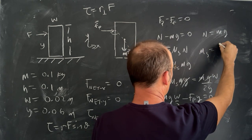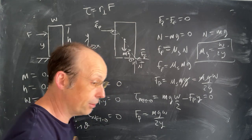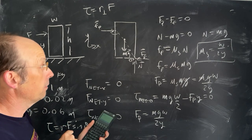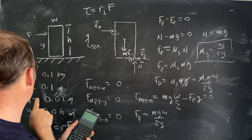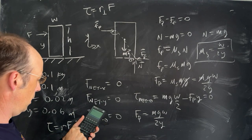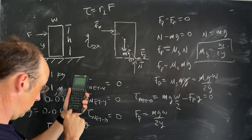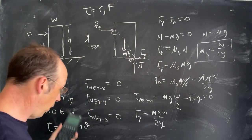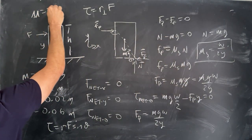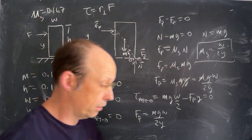Mu S is equal to W over two y. Okay, so let's do that just for this made-up case right here, just so I have a number. Everyone likes numbers. Well, I don't, but I know everyone else does. So it's going to be 0.02, enter, and then I divide by two, and then I divide by y, which is 0.6. And I get 0.167. No units. That's mu S, because it's a coefficient.